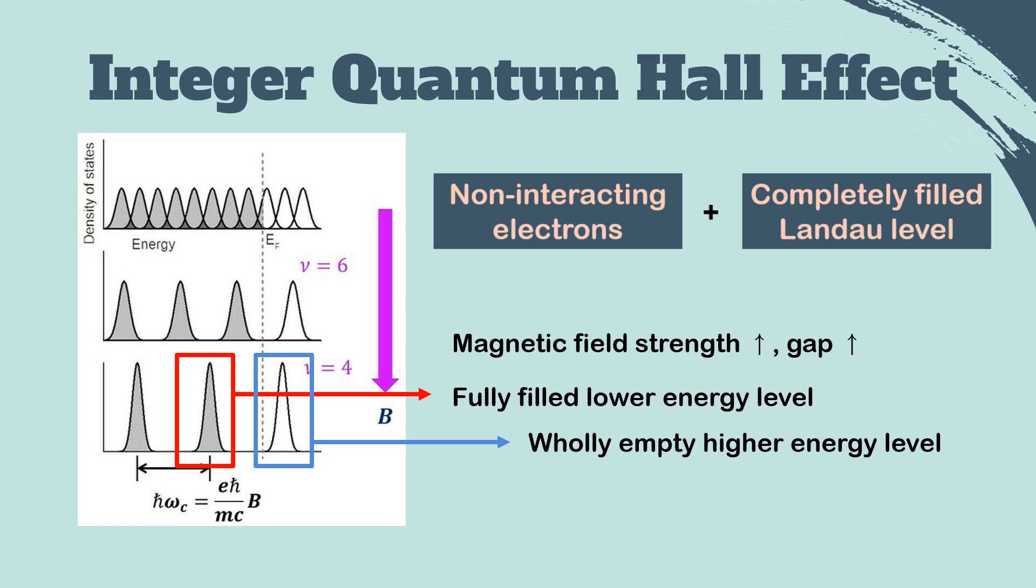When there is a match between the capacity of Landau levels and the number of electrons in the sample, the integer number of the Landau level is exactly filled, so we get the integer quantum Hall effect in this case.